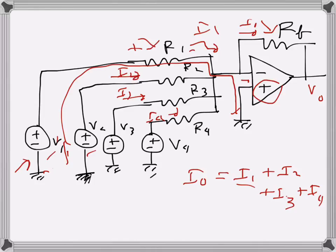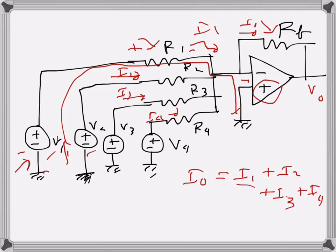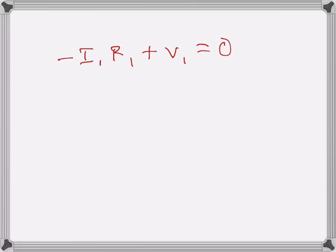So basically, I1 times R1 plus V1 is equal to zero. Sorry, this one will be minus because this is a rise here and this one is a drop here. So we can write I1 is equal to V1 over R1. Similarly, I2 is equal to V2 over R2, and so on. I3 is equal to V3 over R3.